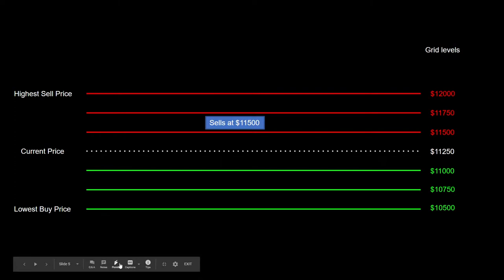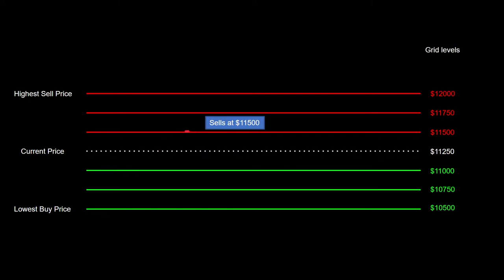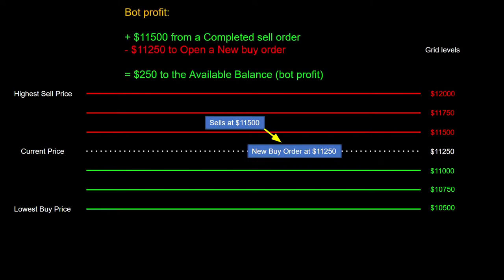Imagine the price moves higher and triggers our first limit sell order at $11,500. The system executes that sell order, cashing out at $11,500, and then takes $11,250 of that to place a new buy limit order. The difference in price is exactly what stands for the bot profit generated, and this can be a never-ending process as long as the price stays within the trading range set for the bot.